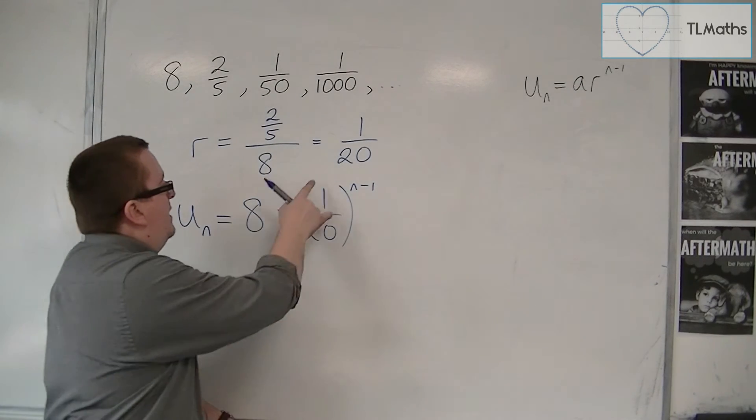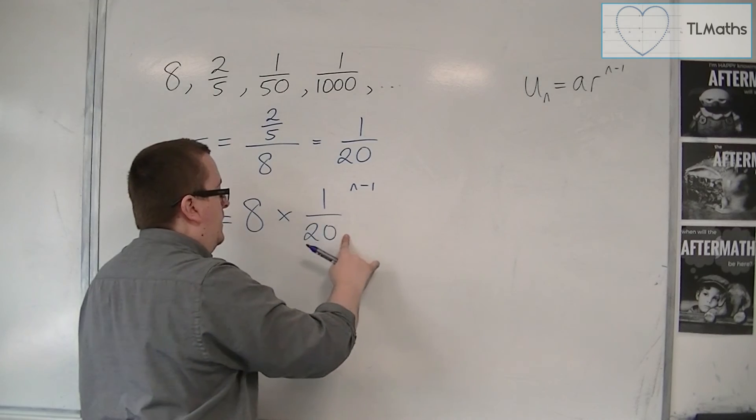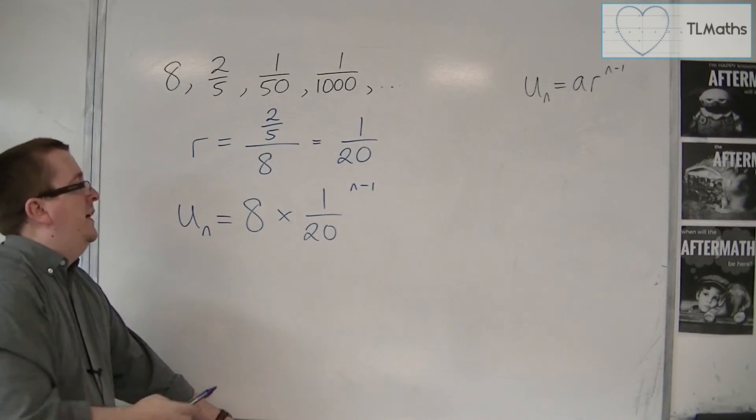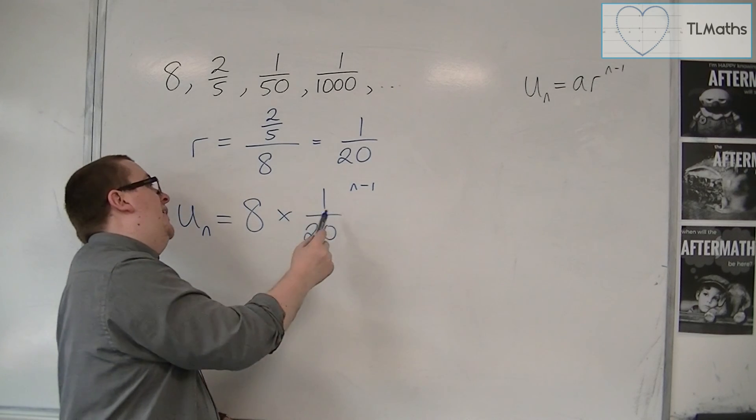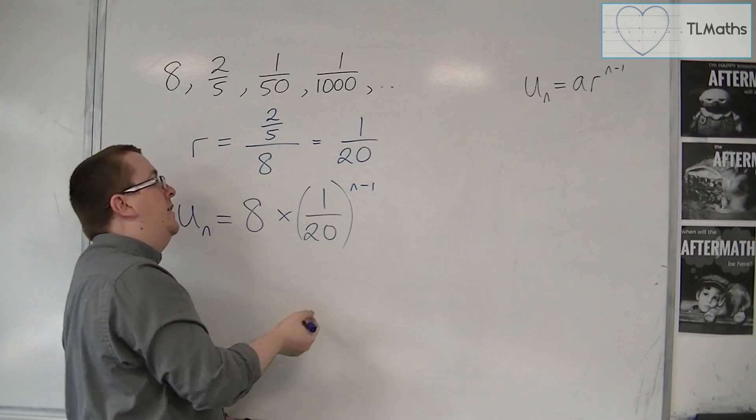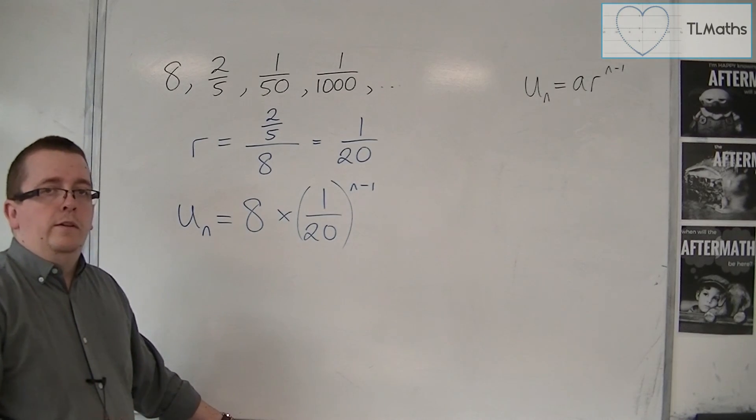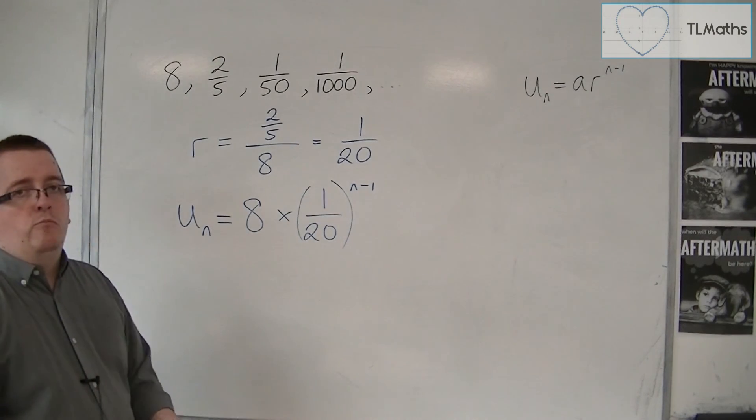Don't leave it like this, because that means it's 8 times 1 to the n minus 1 over 20. It's not telling me to put the whole fraction to the power of n minus 1. So make sure you use a bracket.